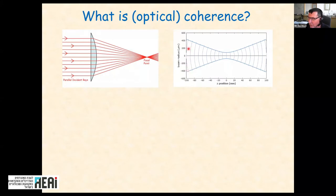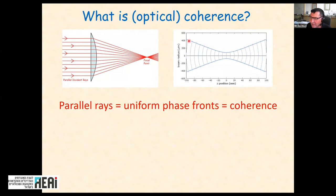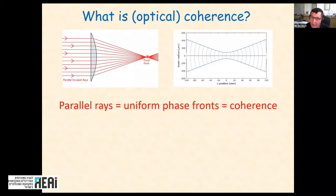A uniform phase enables tight focusing. Parallel rays are equivalent to uniform phase fronts, which I will call coherence. Coherence is the property of a wave where the phase front is uniform — if I know the phase here, I also know the phase there. Coherence is just another way to describe the high-quality parallel rays that are important for focusing, and this is why the coherence of the laser is so important for all the applications I've shown.